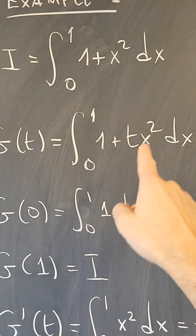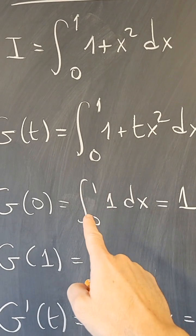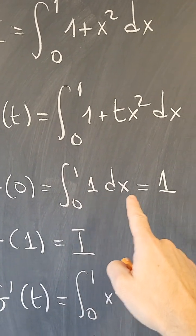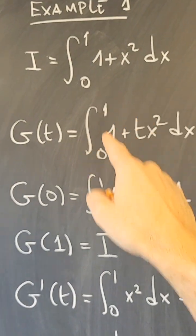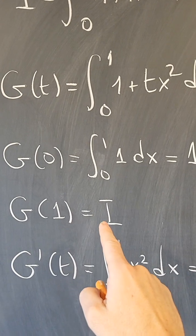Notice that at 0, this vanishes, so I just get the integral from 0 to 1 of 1, so that's just 1. And at 1, I get the original integral, so that's just g of 1 is i.